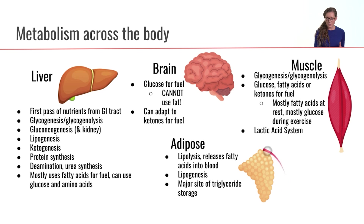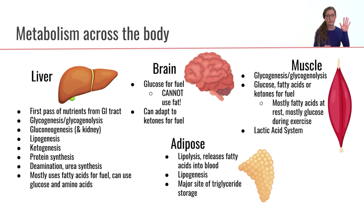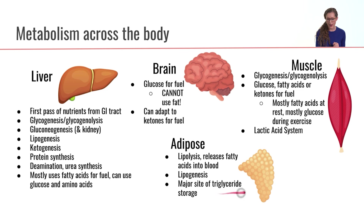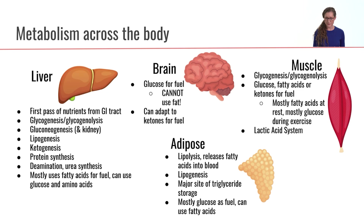Adipose tissue is the major site in our body for triglyceride storage. Triglycerides are the most efficient form of energy storage — we have a limited capacity to store glycogen because glycogen binds with water and becomes heavy, whereas triglycerides are hydrophobic and pack nicely together, allowing us to store lots of energy very efficiently. We have an essentially unlimited ability to store more triglyceride as energy. As for fueling the adipocytes themselves, adipose tissue mostly uses glucose as fuel, but can also use fatty acids.